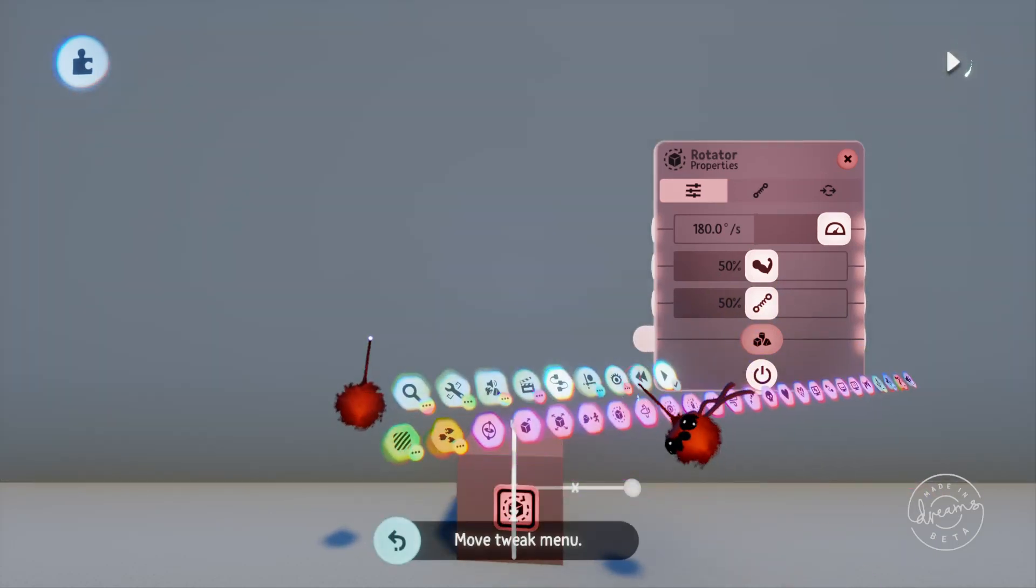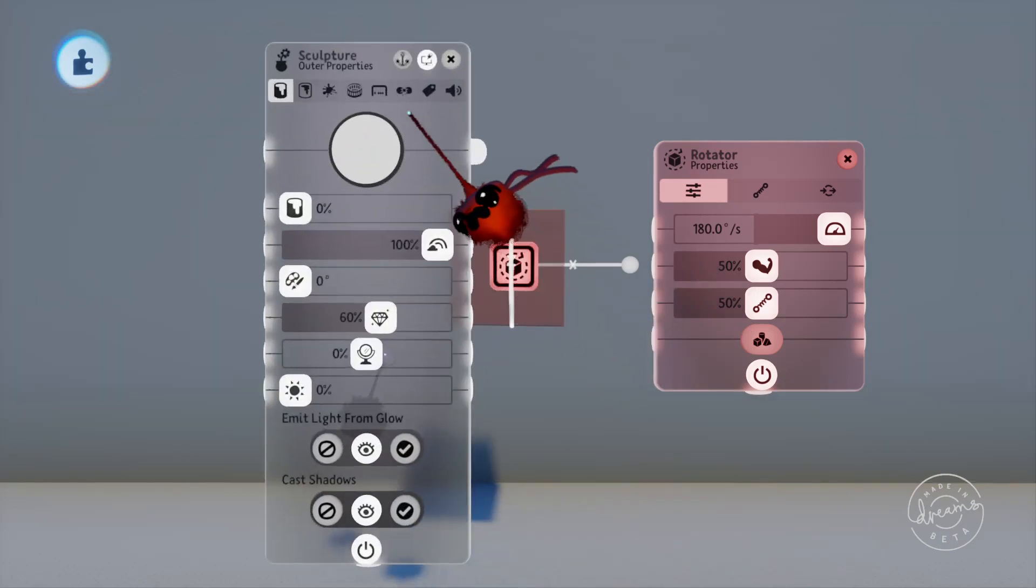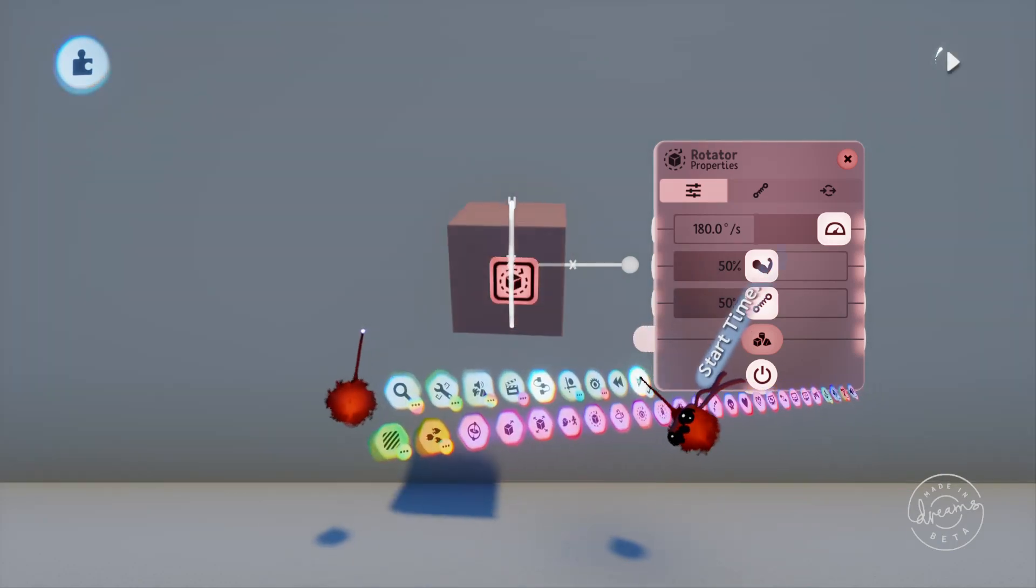We'll just change the cube not to be movable here so it doesn't fall to the ground. You can see here that the rotator will rotate the cube on its axis.